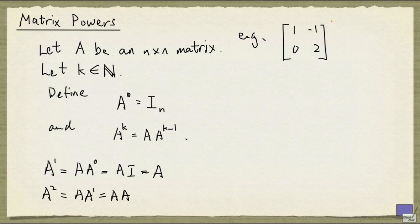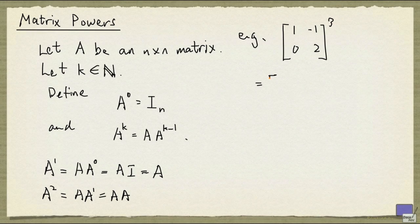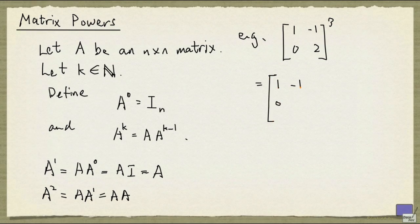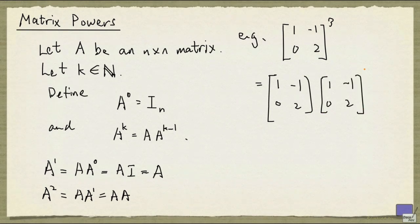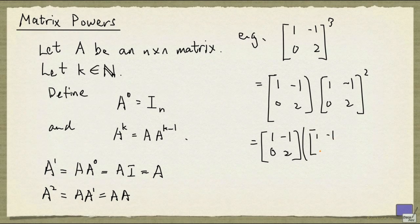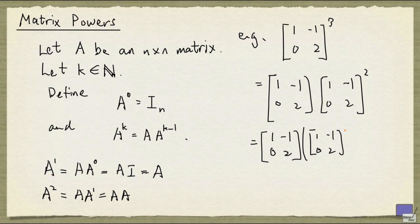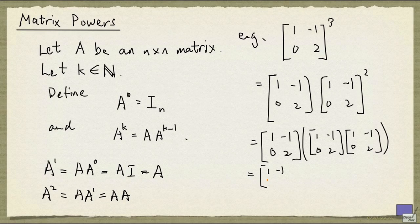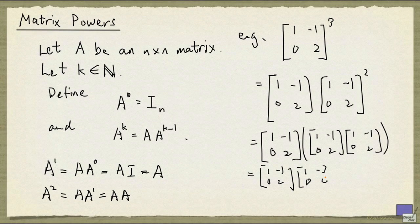And suppose I want to compute this matrix to the power 3. Then this is given by this matrix times the matrix to the power 2. And using what we have obtained here, I can write this as the product of two copies of the matrix. And if you work this out, you'll get 1 minus 3, 0, 4 here.